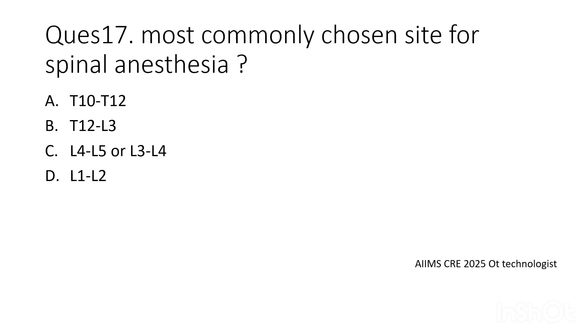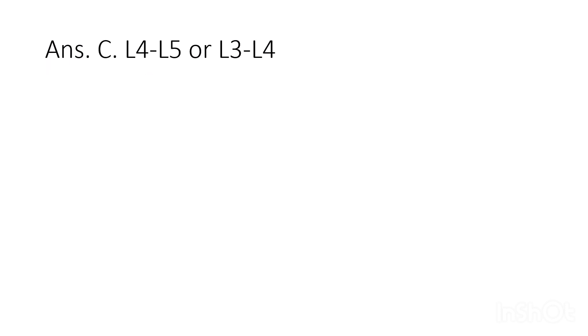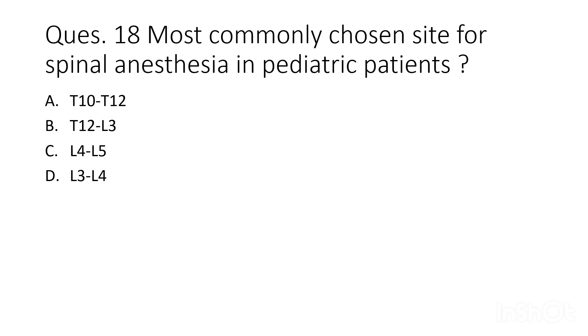Sixteenth question: what is the most commonly chosen site for spinal anesthesia? Options are T10–T12, T12–L3, L4–L5 or L3–L4, or L1–L2. The correct answer is L4–L5 or L3–L4.